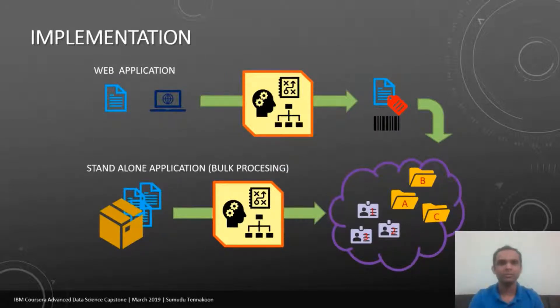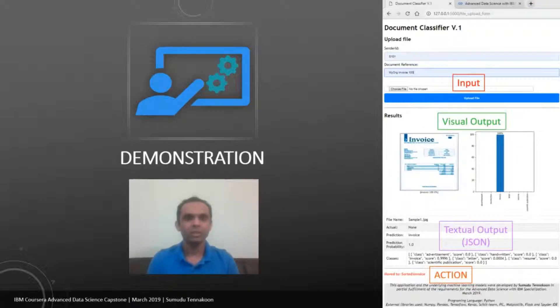Let's talk about the implementation. I implemented the model in two different ways. The first one is a web application and the second one is a standalone application, which is well suited for bulk processing application. In the web application, a user can upload a document using a simple web browser and the document will be passed through the machine learning model in an API call and then will be classified and sorted into an appropriate folder. In the second application, user can call it using command line provided a folder containing the image or multiple images and then those images will be processed and sorted into appropriate folders. In that way, you can use this application on a folder which contains large number of documents. Let's see a demonstration of both of these applications.